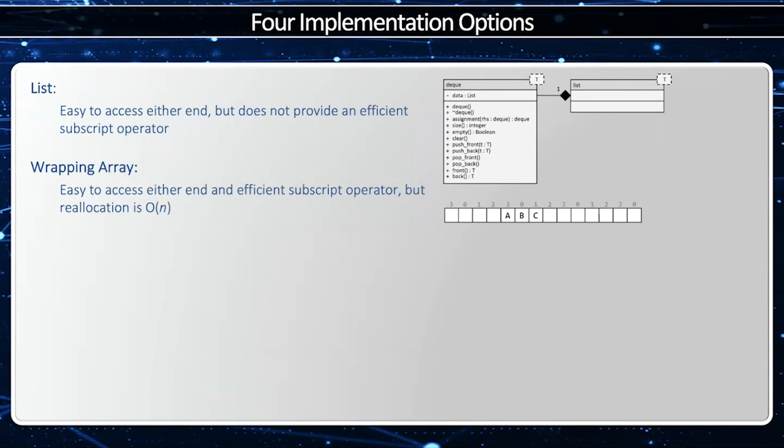The next implementation is a wrapping array. In this implementation, we have an array of elements and we have two indices, the deque index, which the user sees, and the array index, which is the index of the underlying array. Now this is very effective,